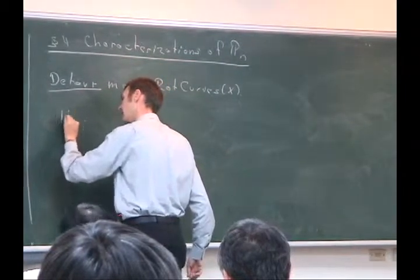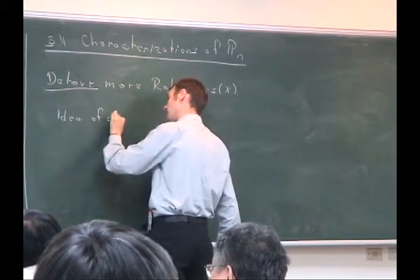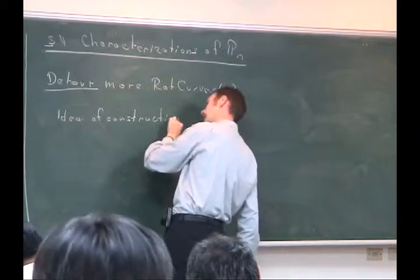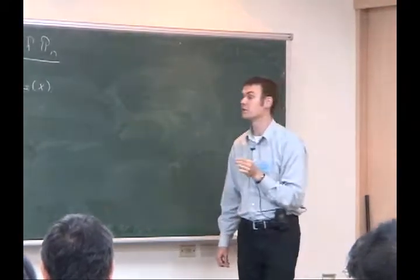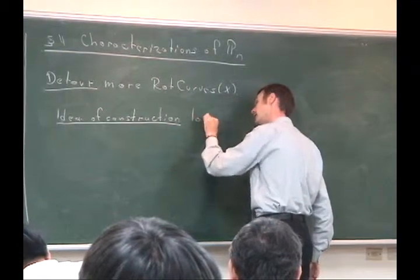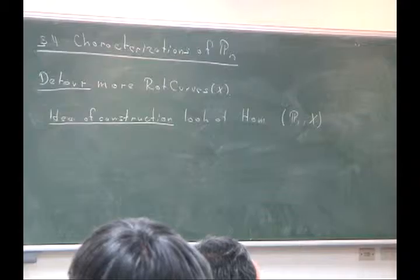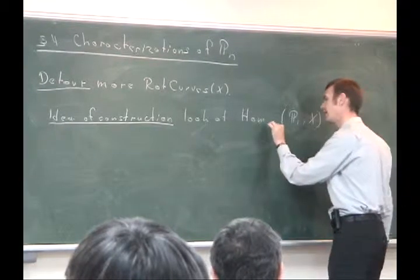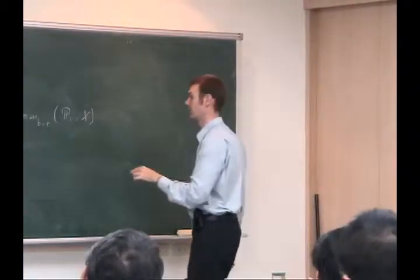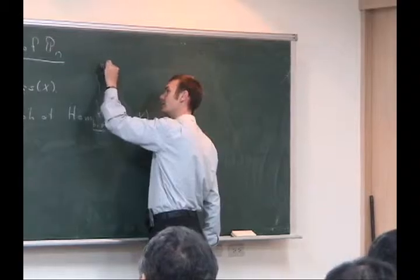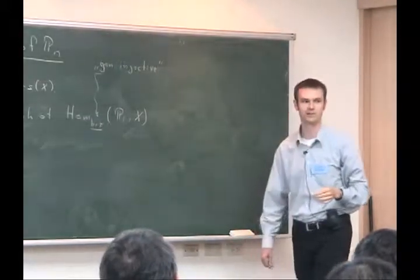The idea is: we look at the space of homomorphisms from P1 into our manifold X — specifically, generically injective homomorphisms, a generically injective sub-scheme of the Hom scheme. If F and G in this Hom scheme are two generically injective morphisms that have the same image, then they differ by an automorphism of P1. This would be completely wrong if the morphisms weren't generically injective. So it's plausible that one can construct an isomorphism from the Hom scheme Hom(P1, X) to the space of rational curves on X, modding out the automorphism group of P1.